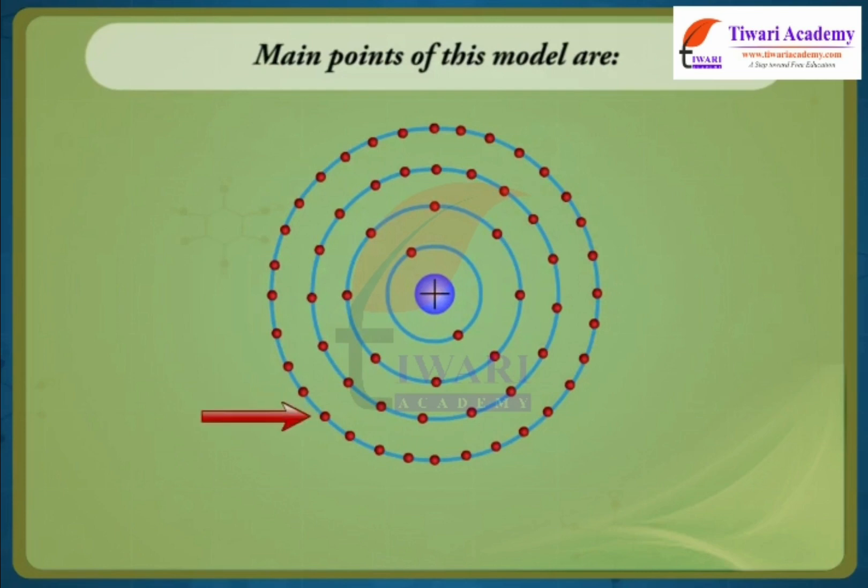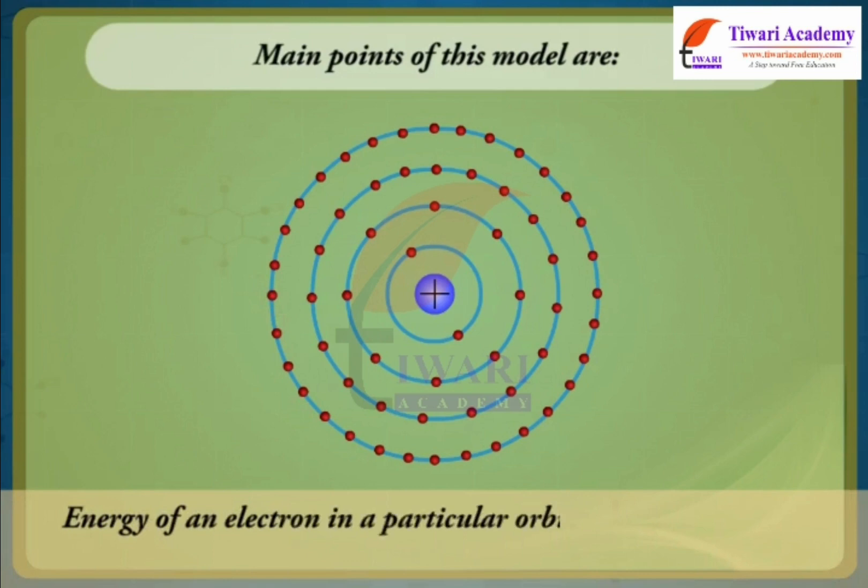As long as the electron remains in a particular orbit, it does not lose or gain energy. This means that energy of an electron in a particular orbit remains constant. That is why these orbits are also called stationary states.